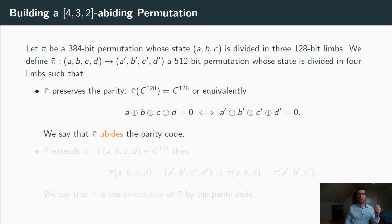The first property that pi bar needs to satisfy is that it preserves the parity. By definition, that means that the input of pi bar satisfies the parity equation if and only if its output satisfies it as well. In the context of permutation, we will often abuse the term codeword in order to designate a state that satisfies the parity equation. With that convention, this property can be phrased as pi bar must map codewords to codewords and non-codewords to non-codewords. If this is the case, then we will say that pi bar abides the parity code.